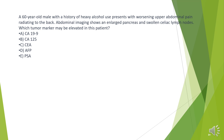A 60-year-old male with a history of heavy alcohol use presents with worsening upper abdominal pain radiating to the back. Abdominal imaging shows an enlarged pancreas and swollen celiac lymph nodes. Which tumor marker may be elevated in this patient?